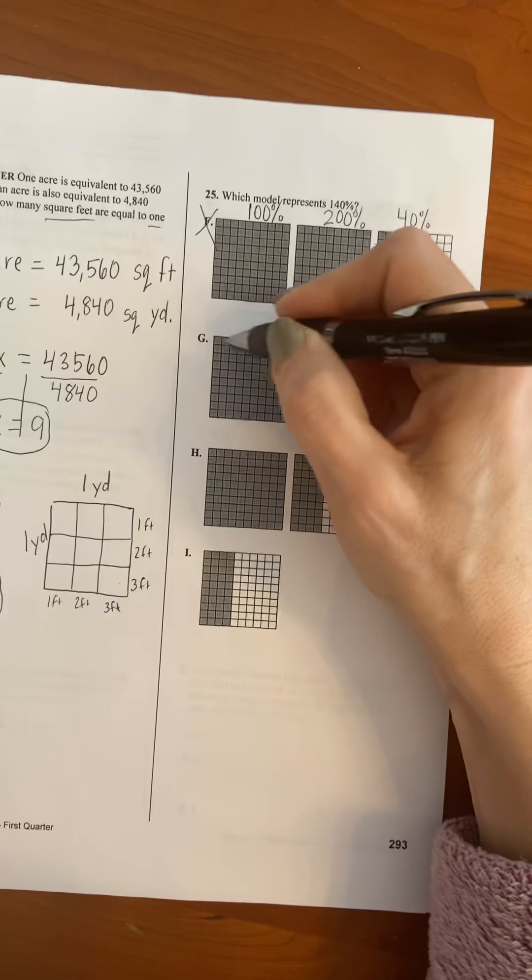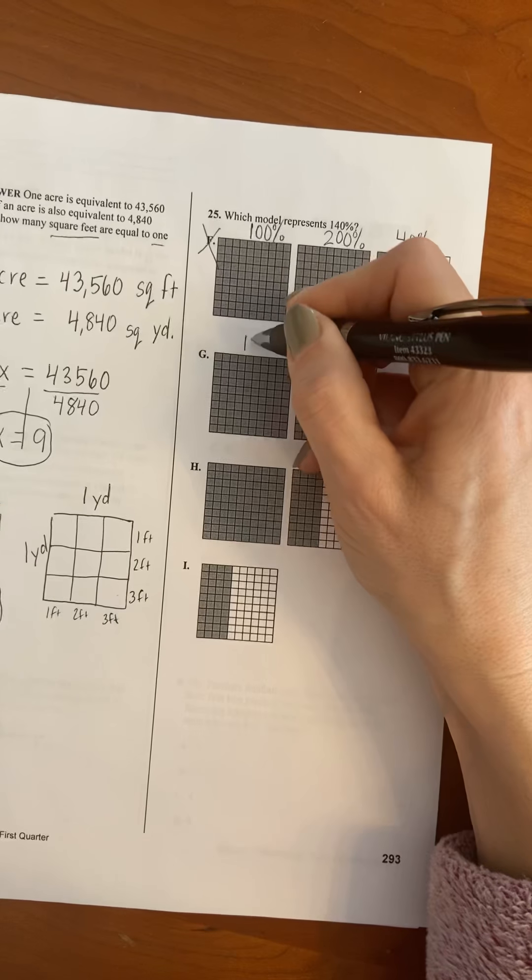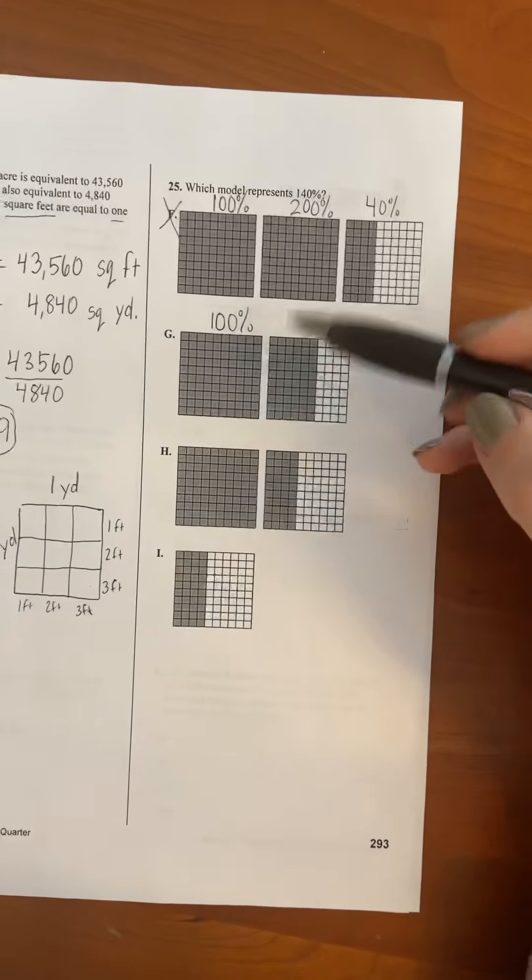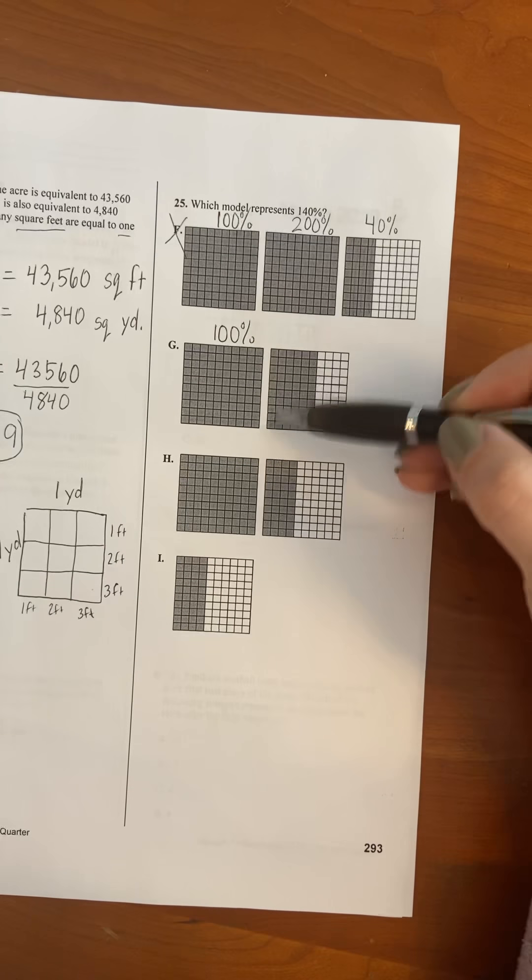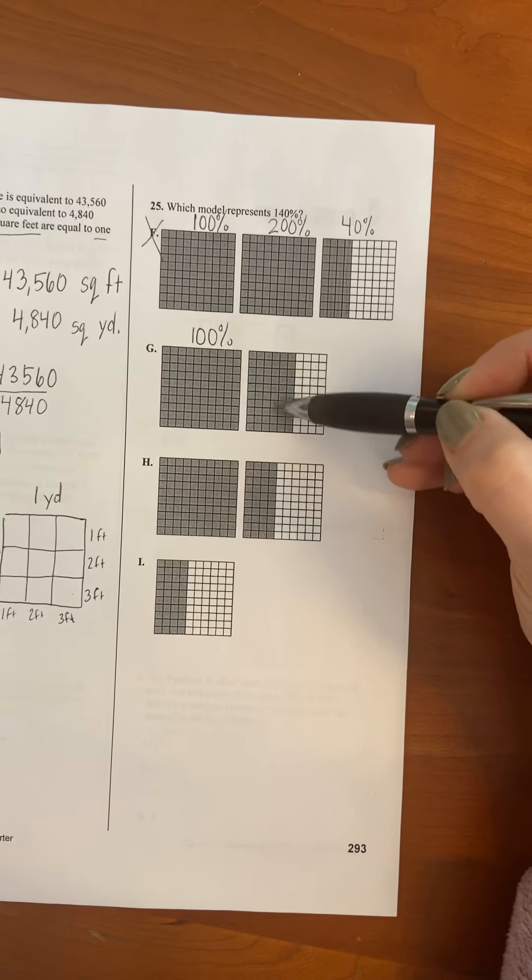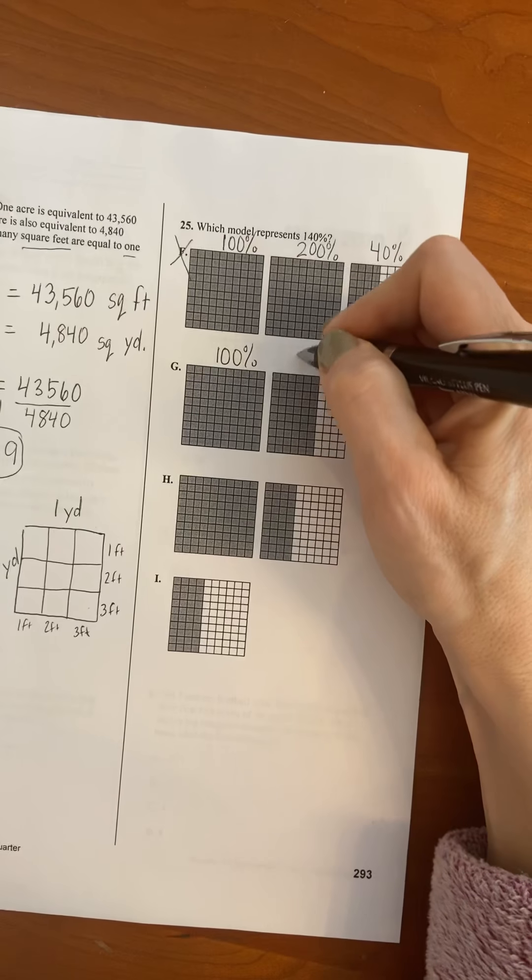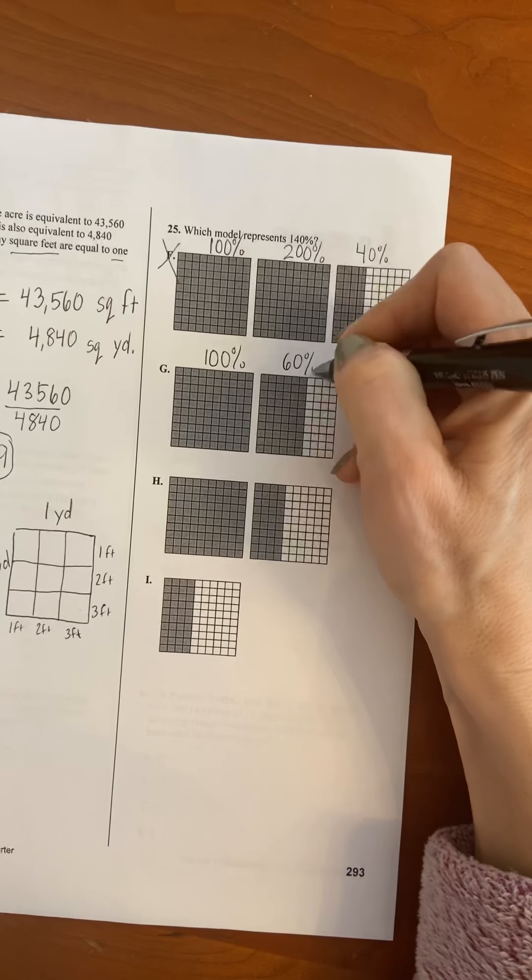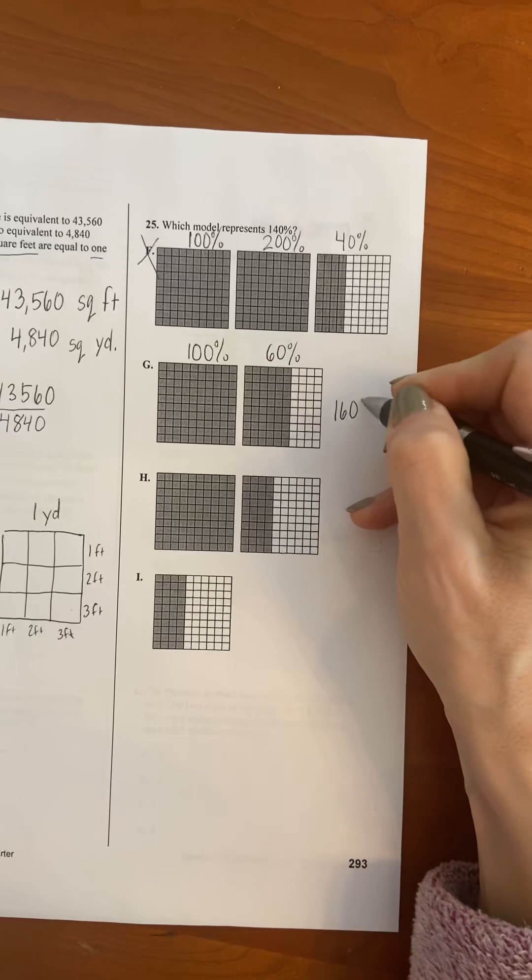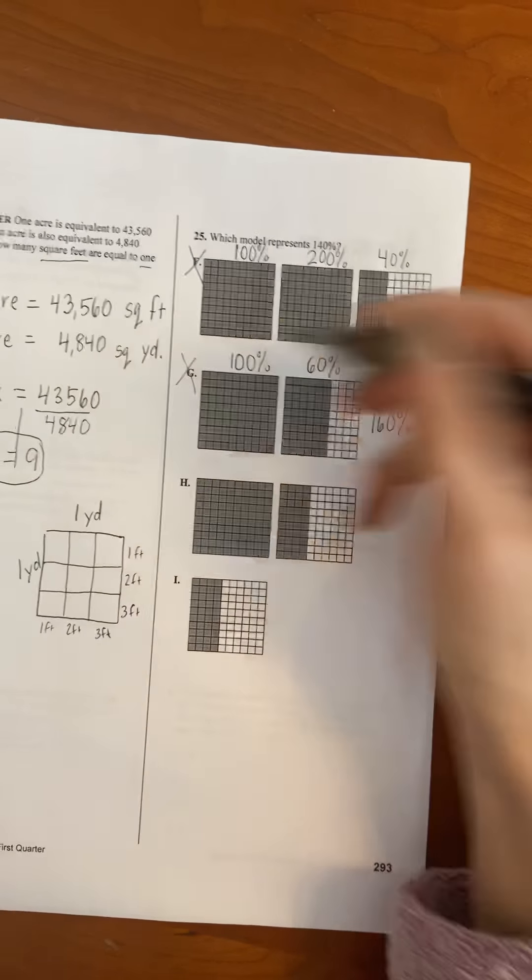For letter G, again, the whole picture is shaded, all 100 out of 100 boxes. So that's 100 percent. And then count these columns by 10. So 10, 20, 30, 40, 50, 60. So this has 60 out of 100 boxes shaded. So that's 60 percent. So this model is showing 160 percent. Not the choice we're looking for.